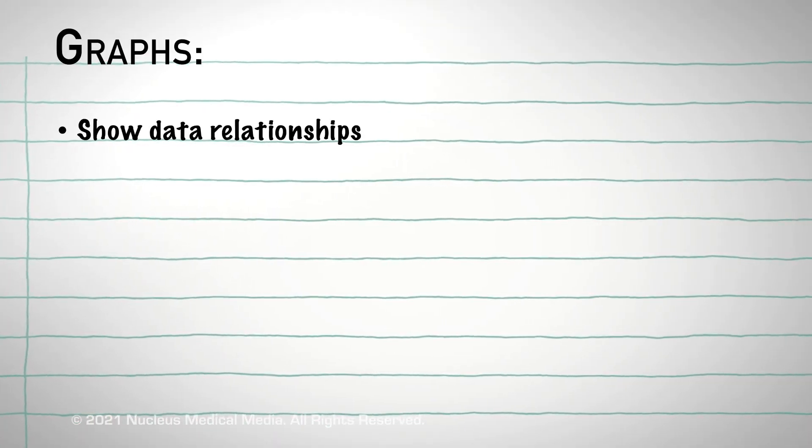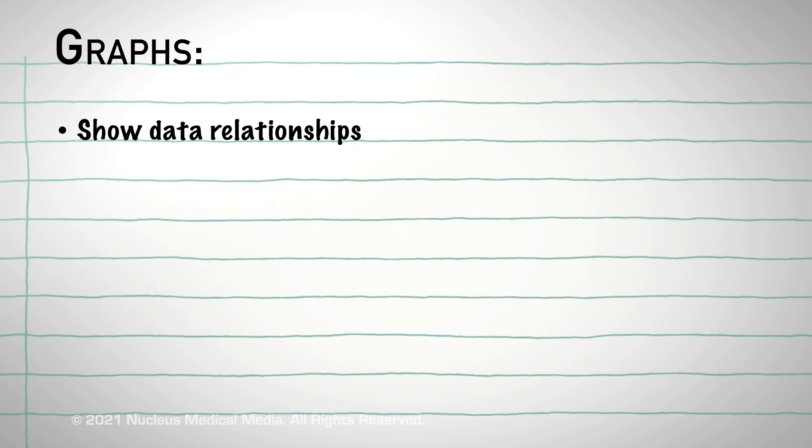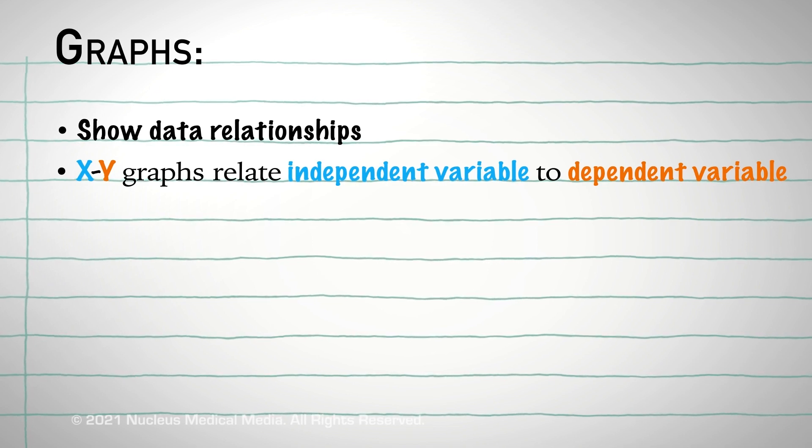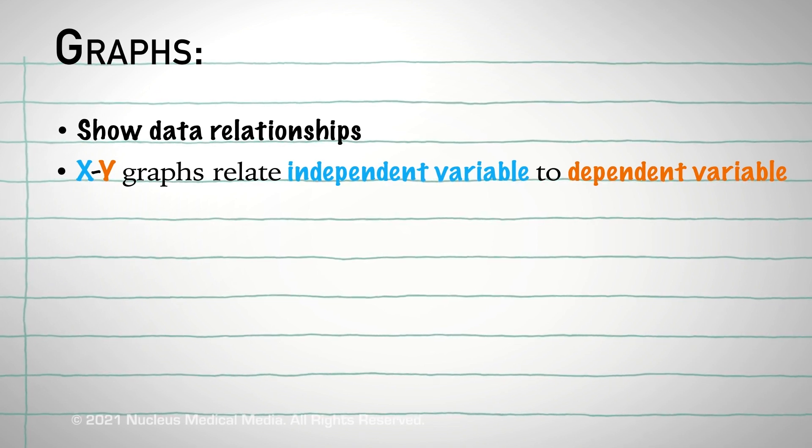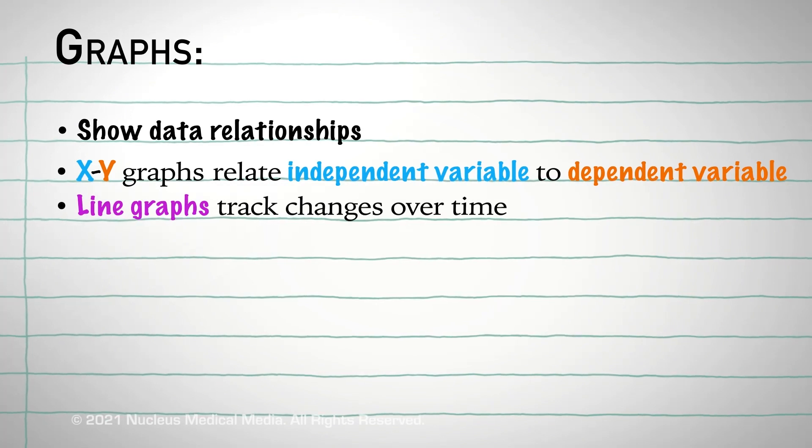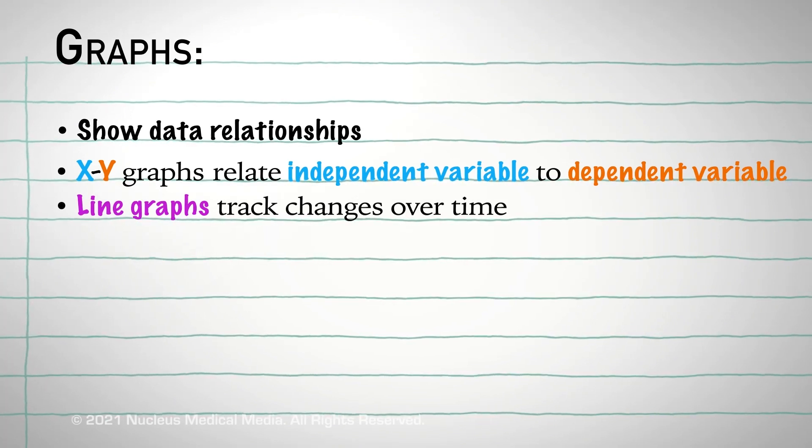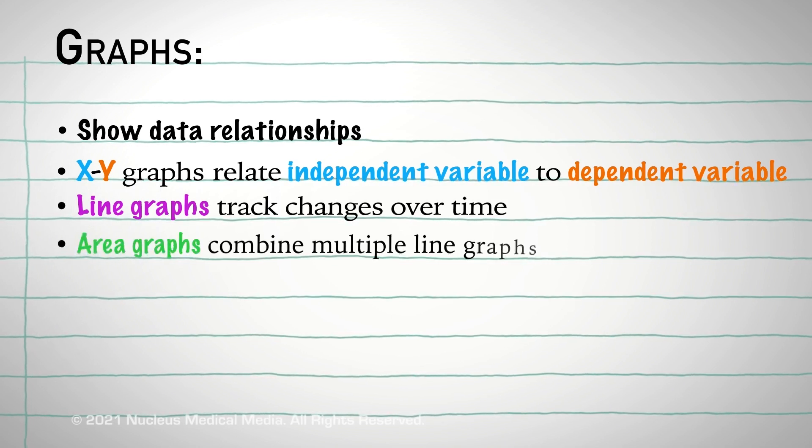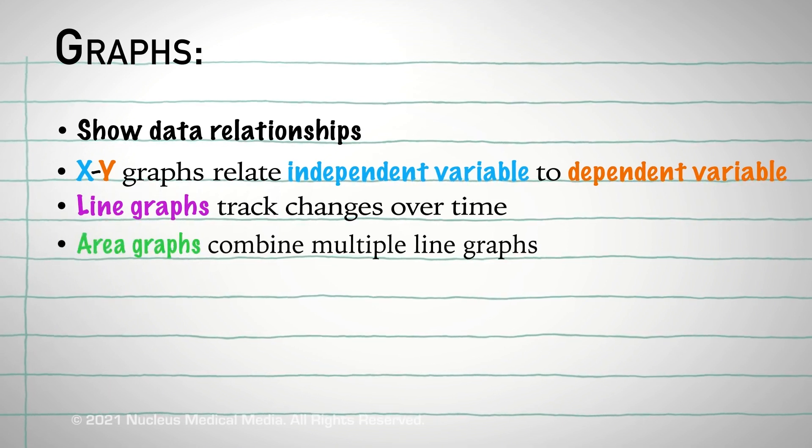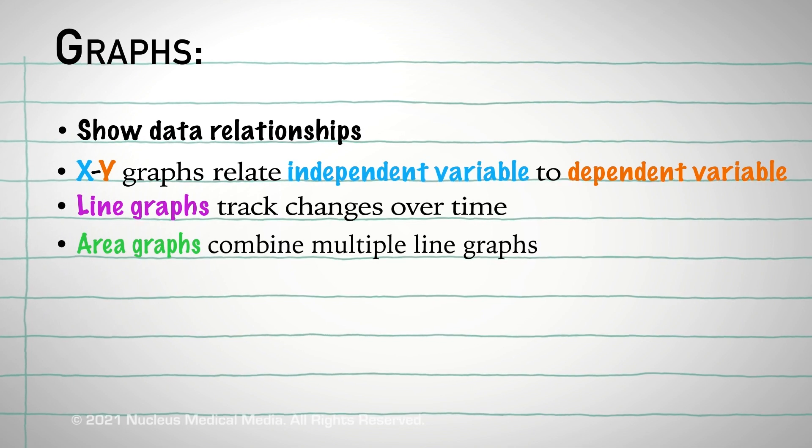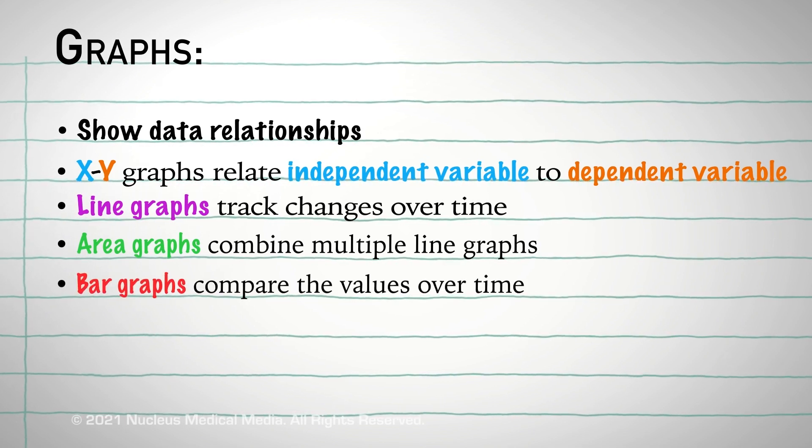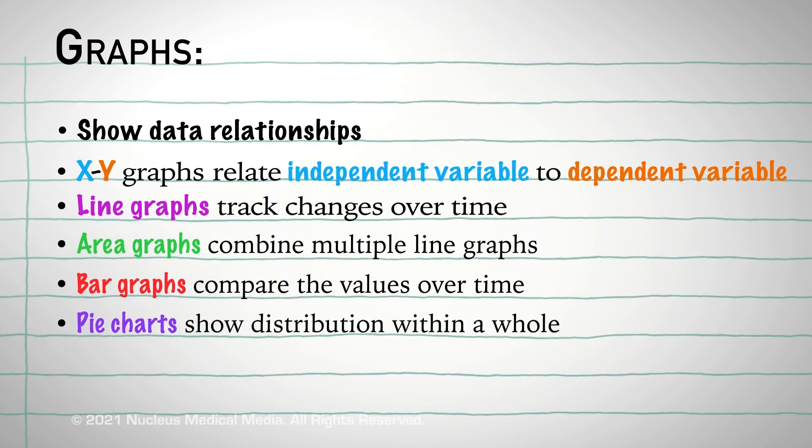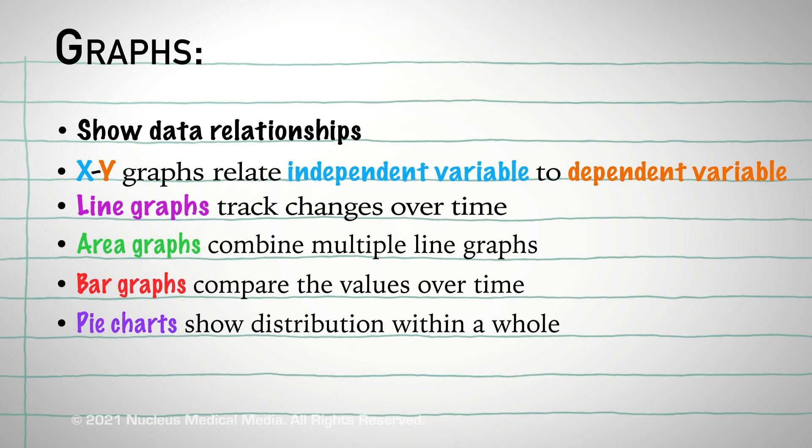So to review, graphs are an organized way to show data. XY graphs show how an independent variable on the x-axis relates to a dependent variable on the y-axis. Line graphs also have x and y-axis, but track changes that take place usually over time. Area graphs are a combination of multiple line graphs. Bar graphs compare values or track changes over time. And pie charts show the various percentages of things within a whole group.